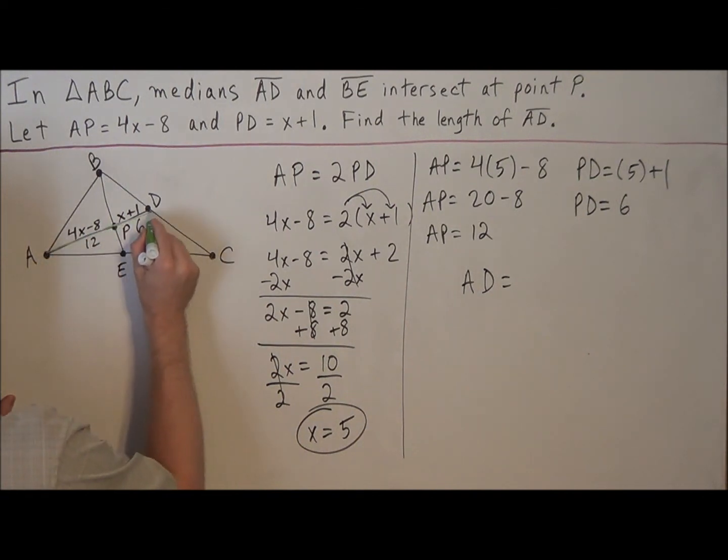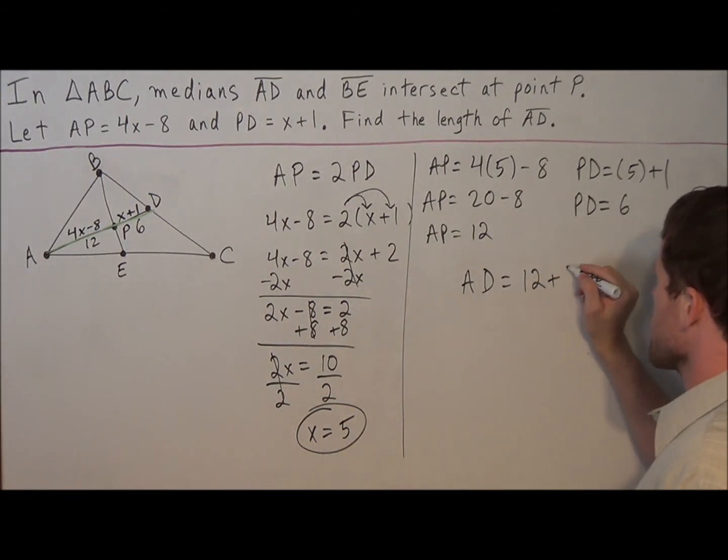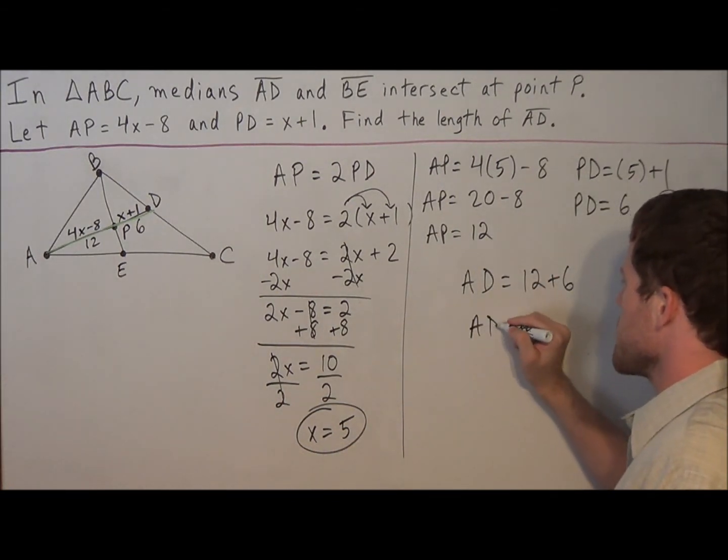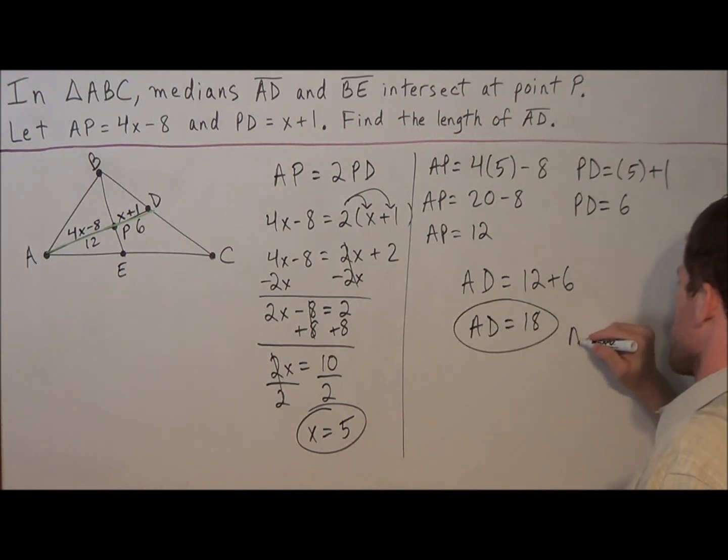So AD is equal to 12 plus 6. And our final answer AD is equal to 18. So this is our answer here.